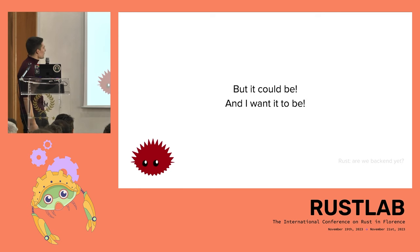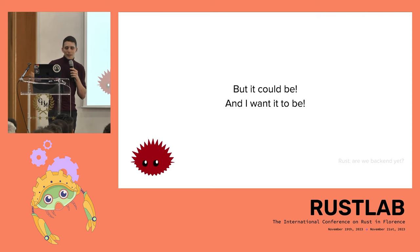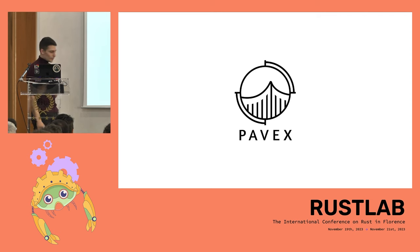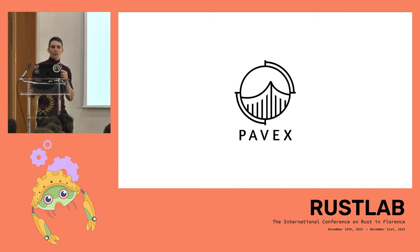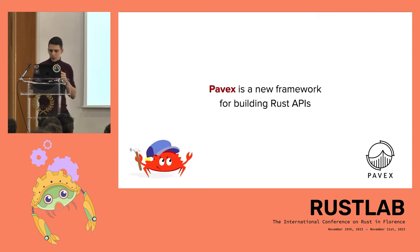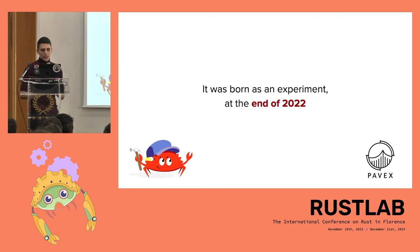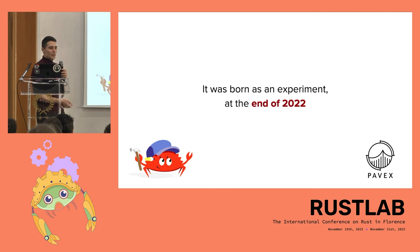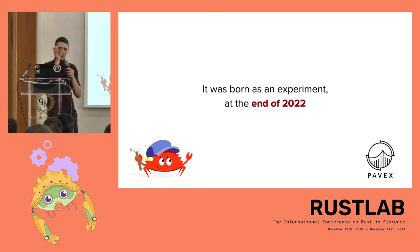This is a Rust conference and I've been a Rust developer for five years — I want it to be a mainstream language. And I think it can be, which brings us to Pavex. Don't get the wrong impression that it solves all these problems — it doesn't — but it tries to make some steps in that direction. Pavex is a new framework for building Rust APIs. It was born as an experiment at the end of 2022 when I got frustrated about some of the compiler errors I alluded to.